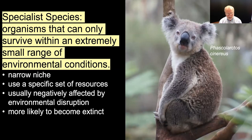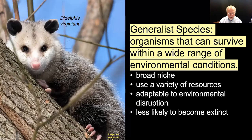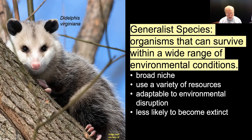Some organisms are highly susceptible to ecosystem disruption, while others are less so. Those that are highly susceptible are referred to as specialist species. They're specialists because they have a very narrow niche — that is, they can only survive within an extremely small range of environmental conditions. Anything about the life history, behavior, or habitat that causes these organisms to be special perches them on the edge of extinction. A good example of a specialist organism is the koala, because it only eats one kind of food: eucalyptus leaves.